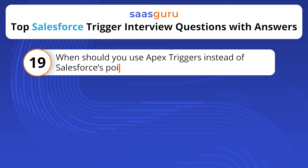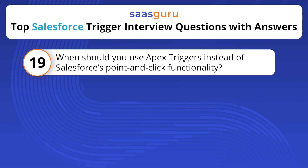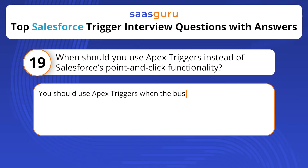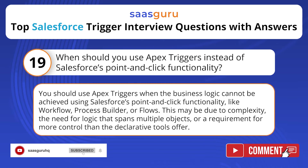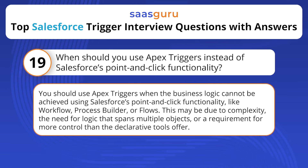When should you use Apex triggers instead of Salesforce's point-and-click functionality? You should use Apex triggers when the business logic cannot be achieved using Salesforce's point-and-click functionality like workflow, process builder, or flows. This may be due to complexity, the need for logic that spans multiple objects, or a requirement for more control than the declarative tools offer.